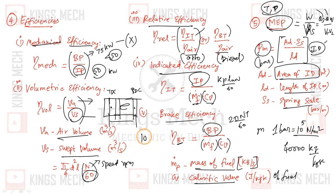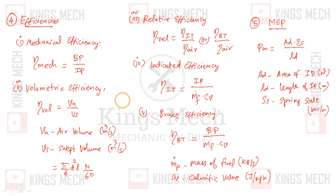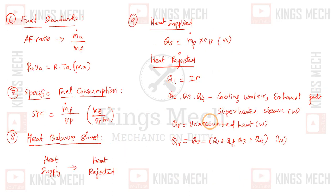One bar equals 10 to the power of 5 Newton per meter squared. This unit conversion is important for mean effective pressure, relative efficiency, indicated efficiency, and brake efficiency calculations.